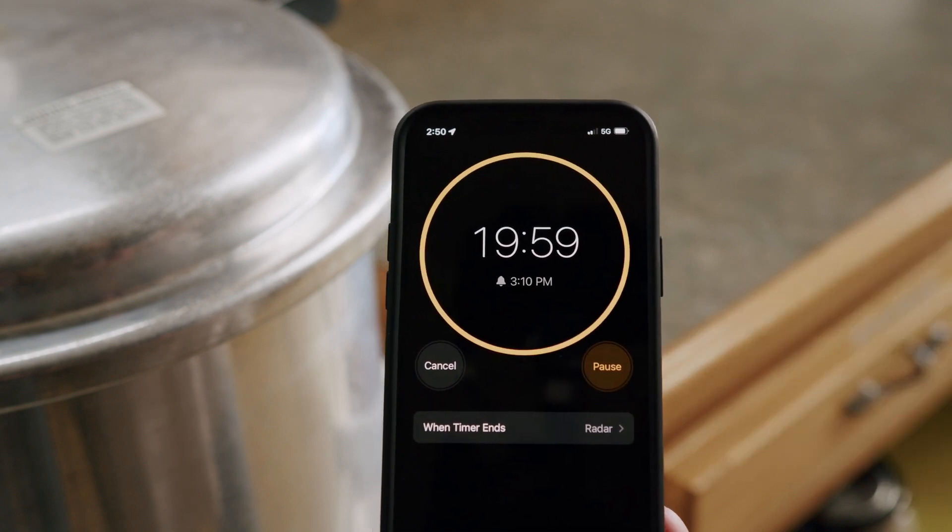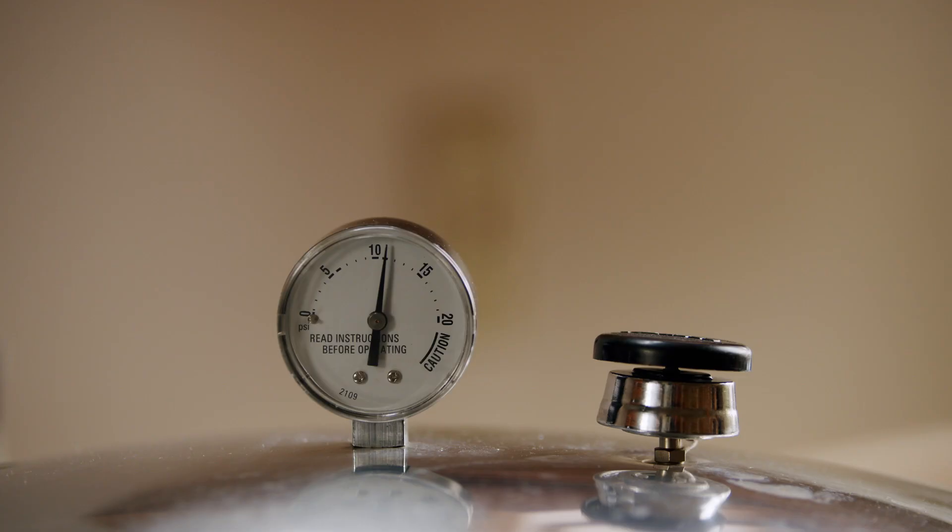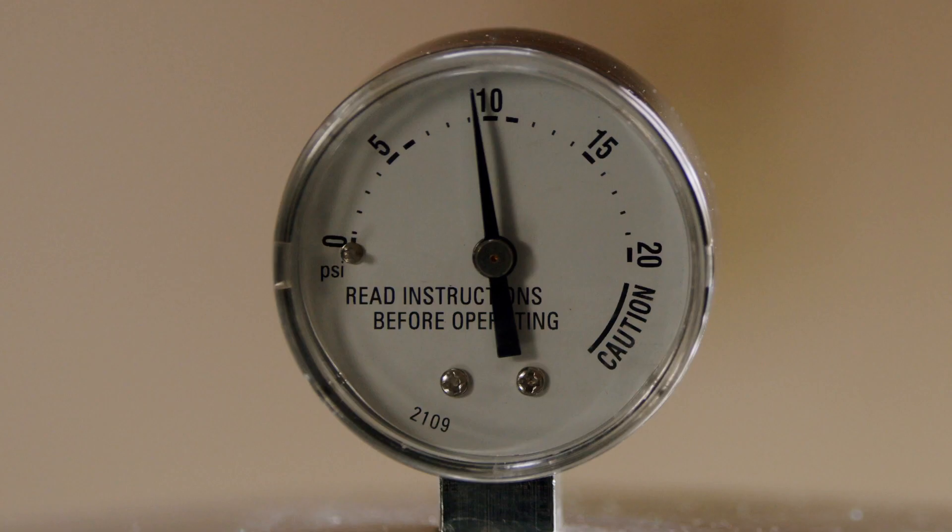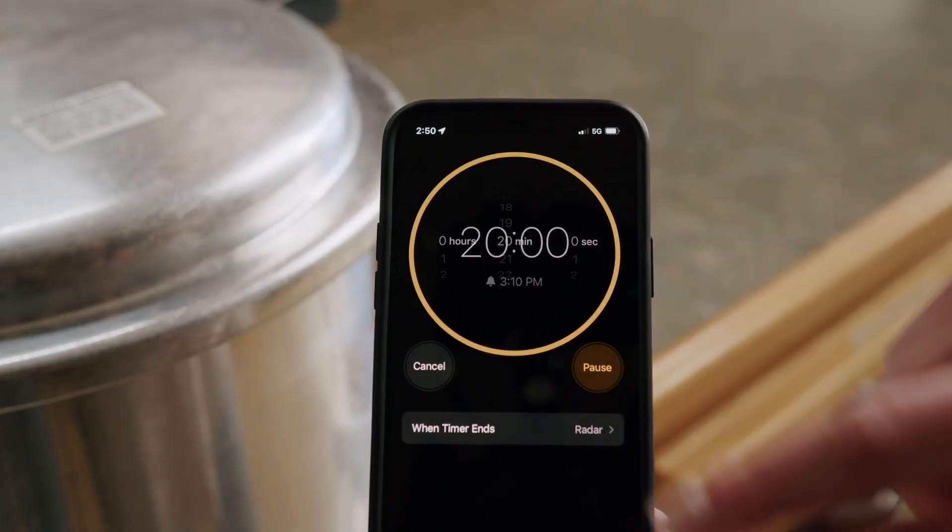Set your timer according to the research-based recipe. Regulate the heat under the canner to maintain a steady pressure. If the pressure reading goes below the recommended pressure, bring the pressure back up and start the timing process again.